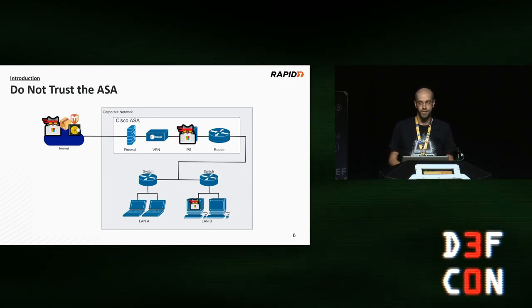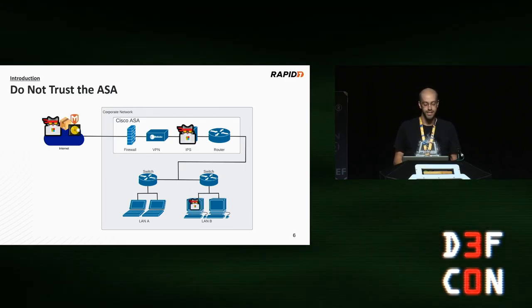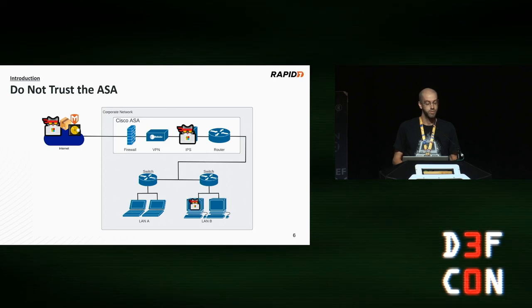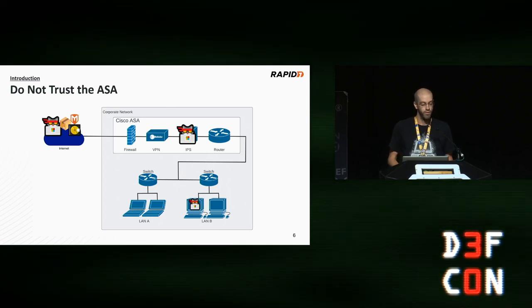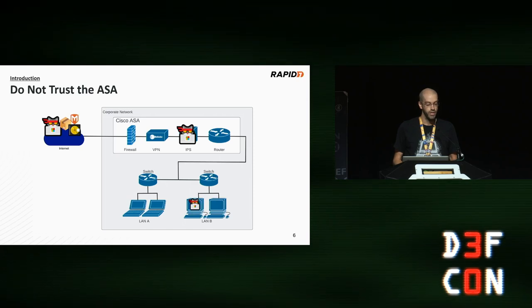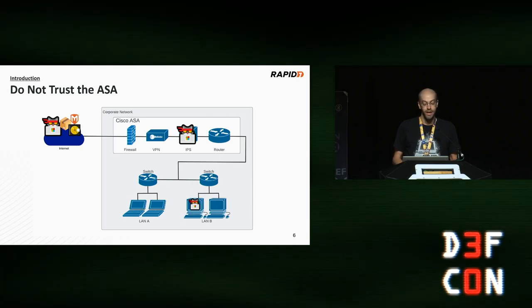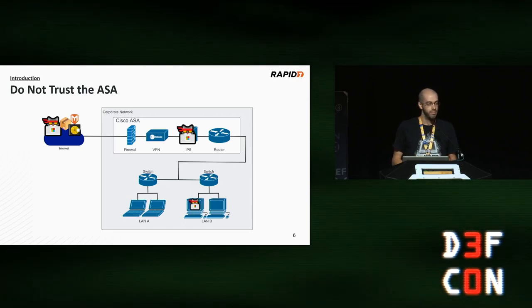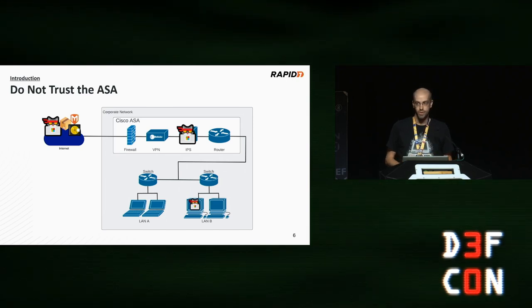This talk is called 'Do Not Trust the ASA' because we're going to use features and vulnerabilities affecting the ASA in order to get root shells on the ASA itself, as well as shells on the administrative systems that connect to it.